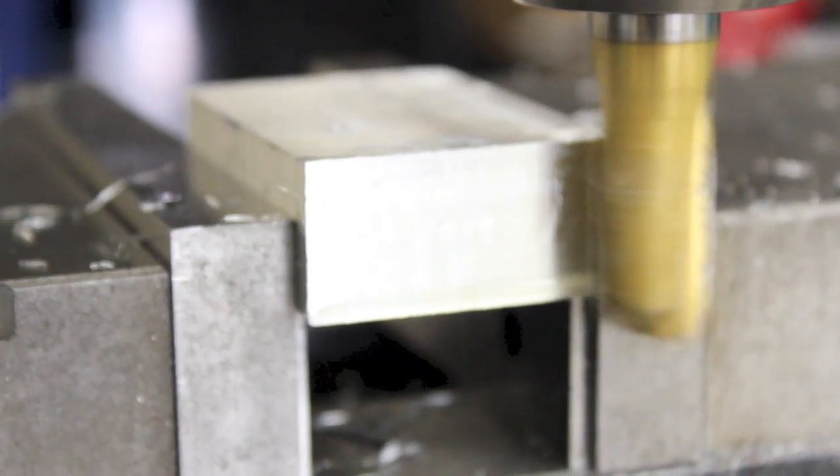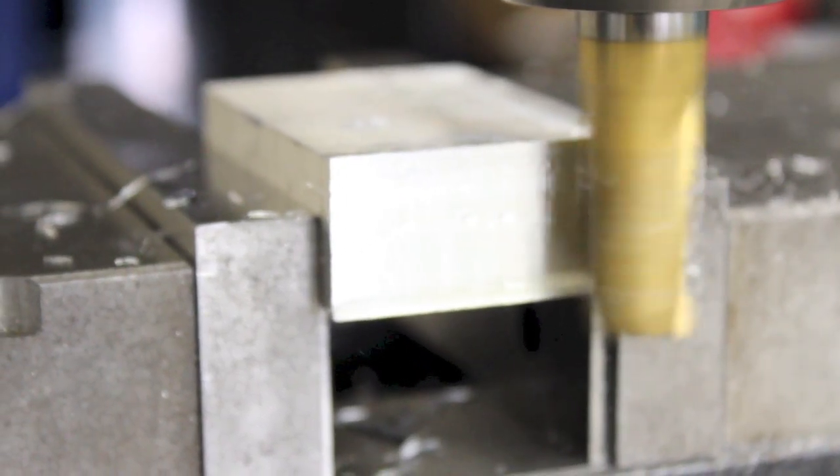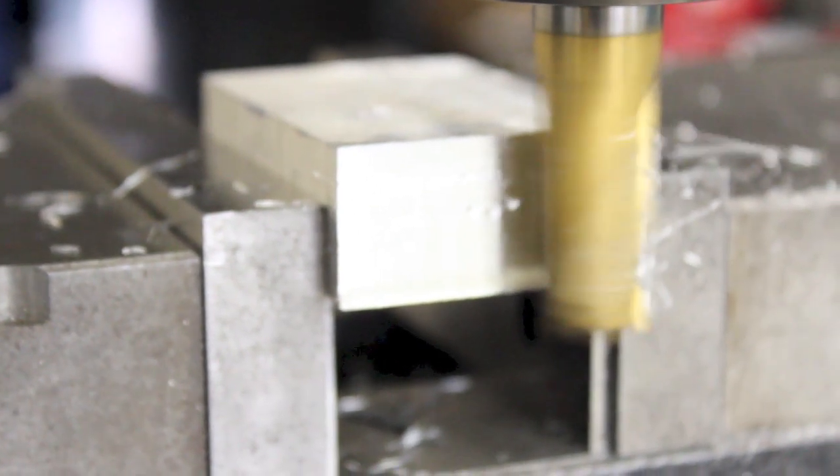When the end mill cutter moves along the workpiece in the same direction that the cutter is rotating, this is called climb milling.